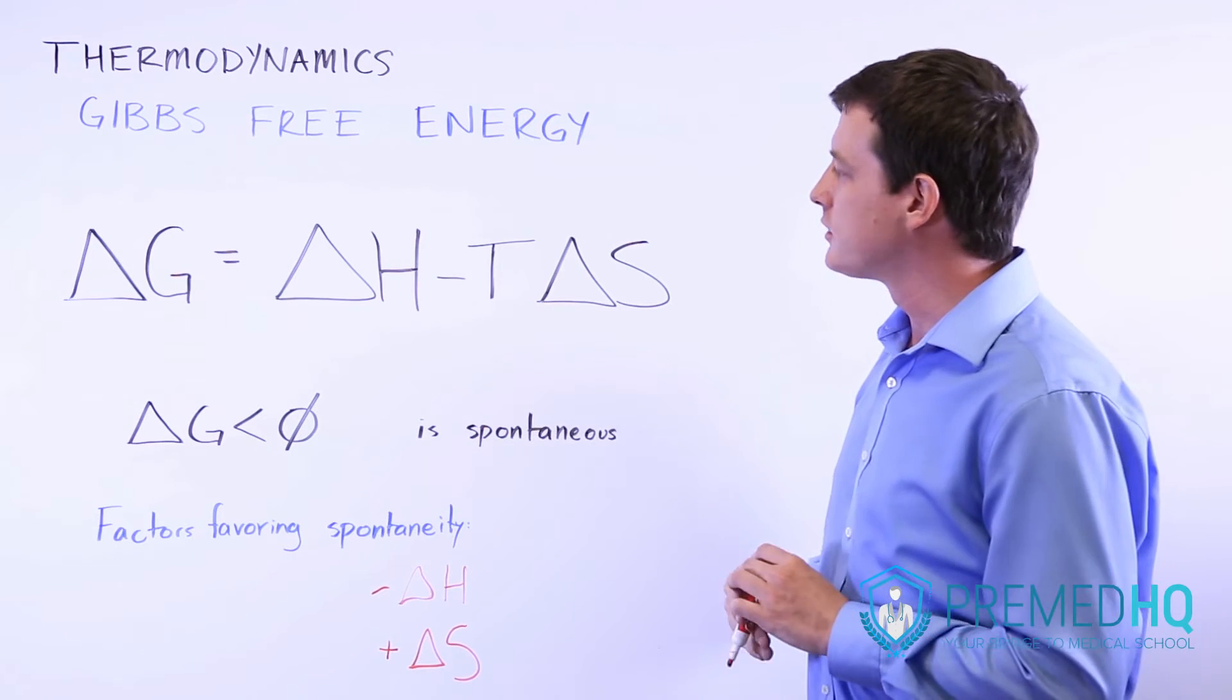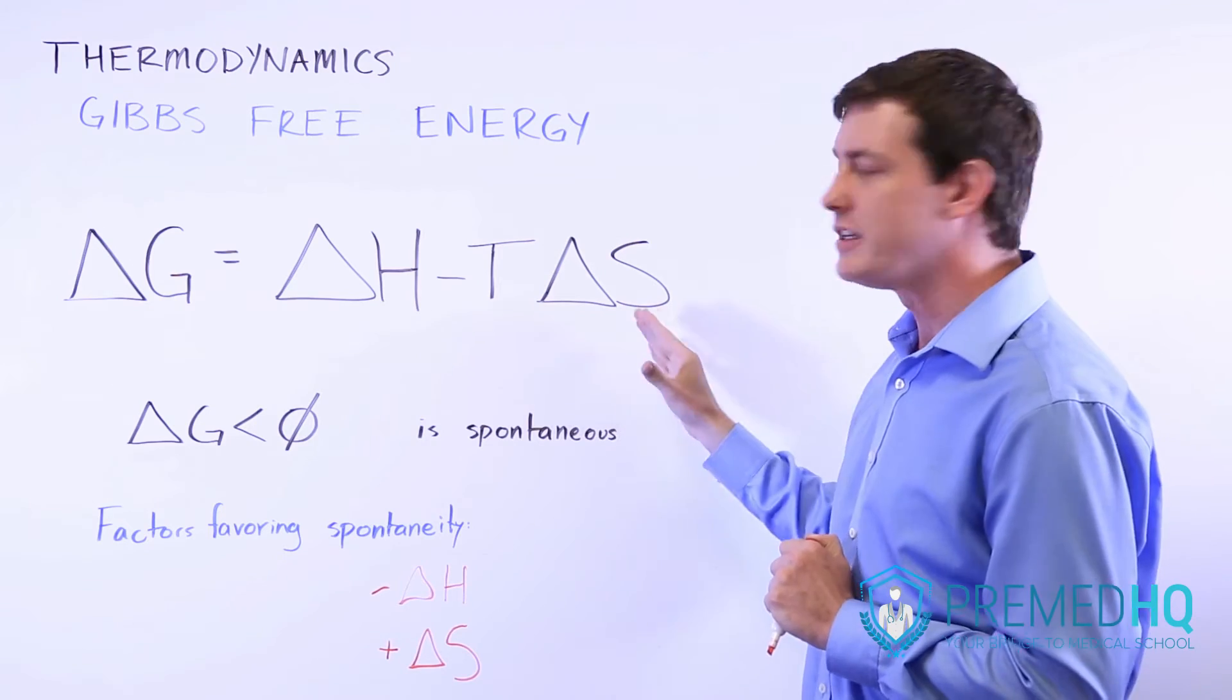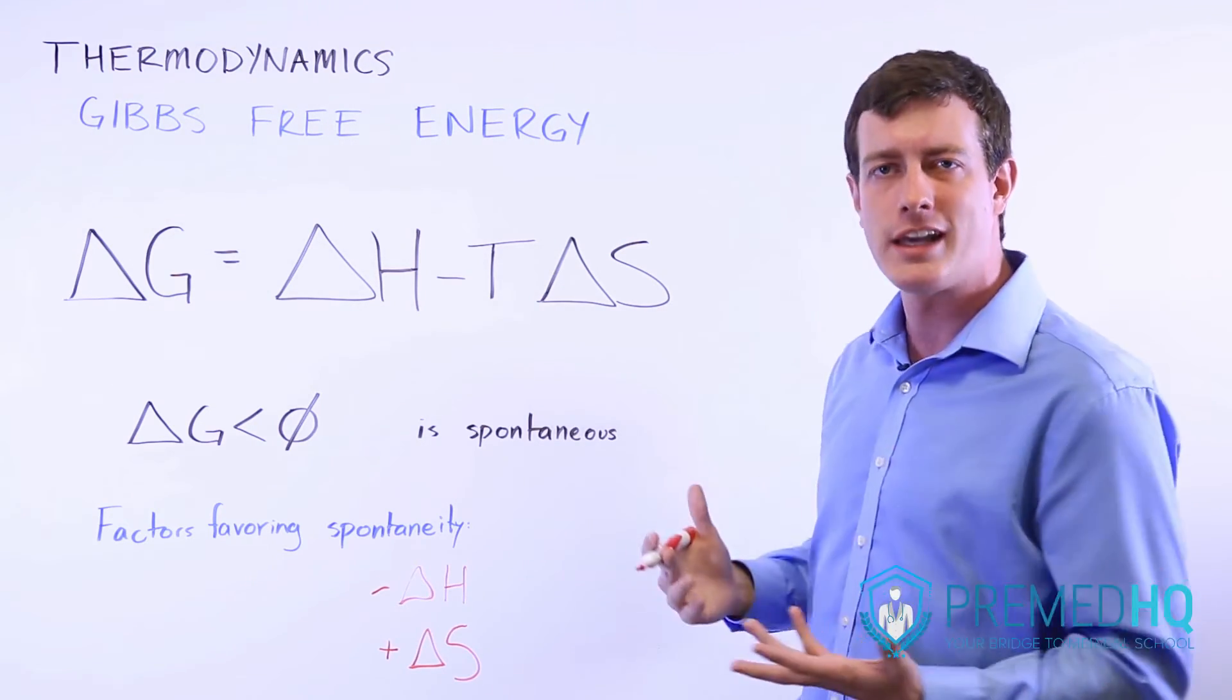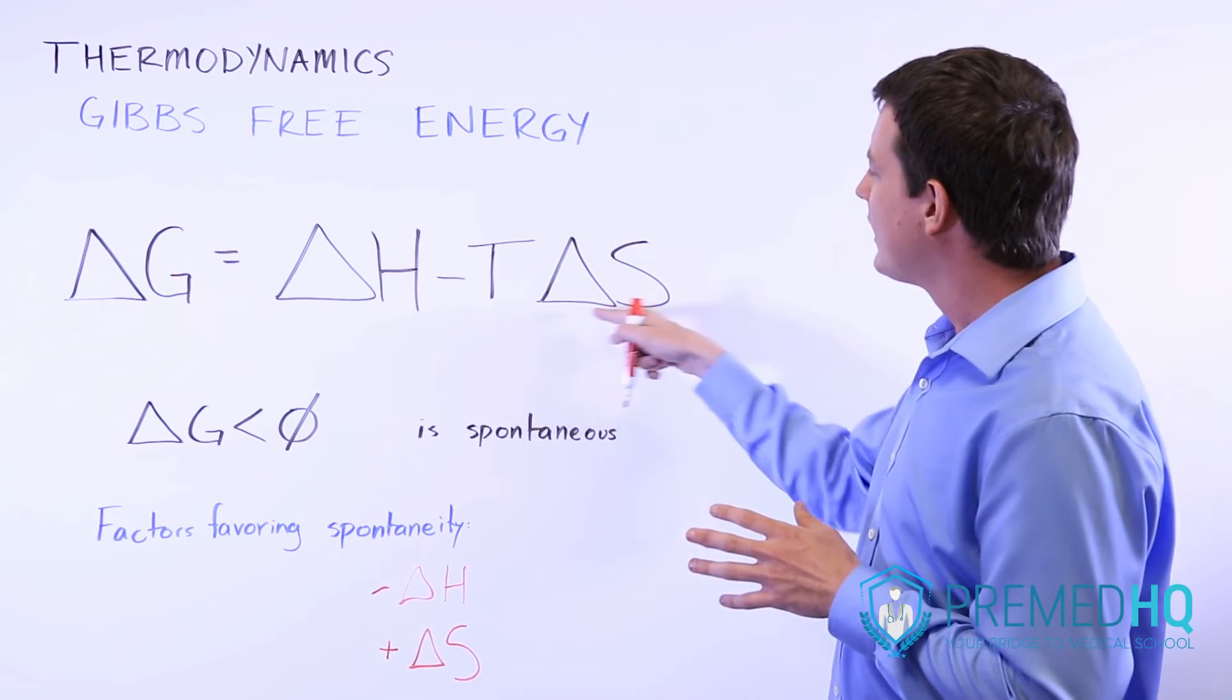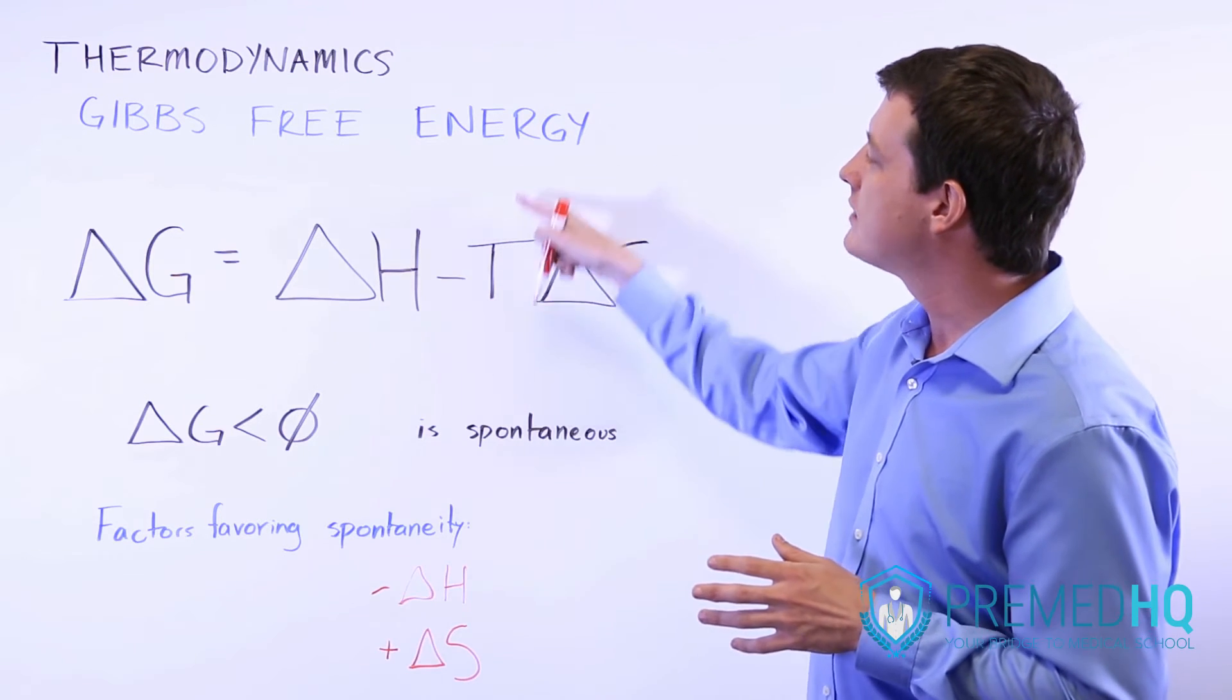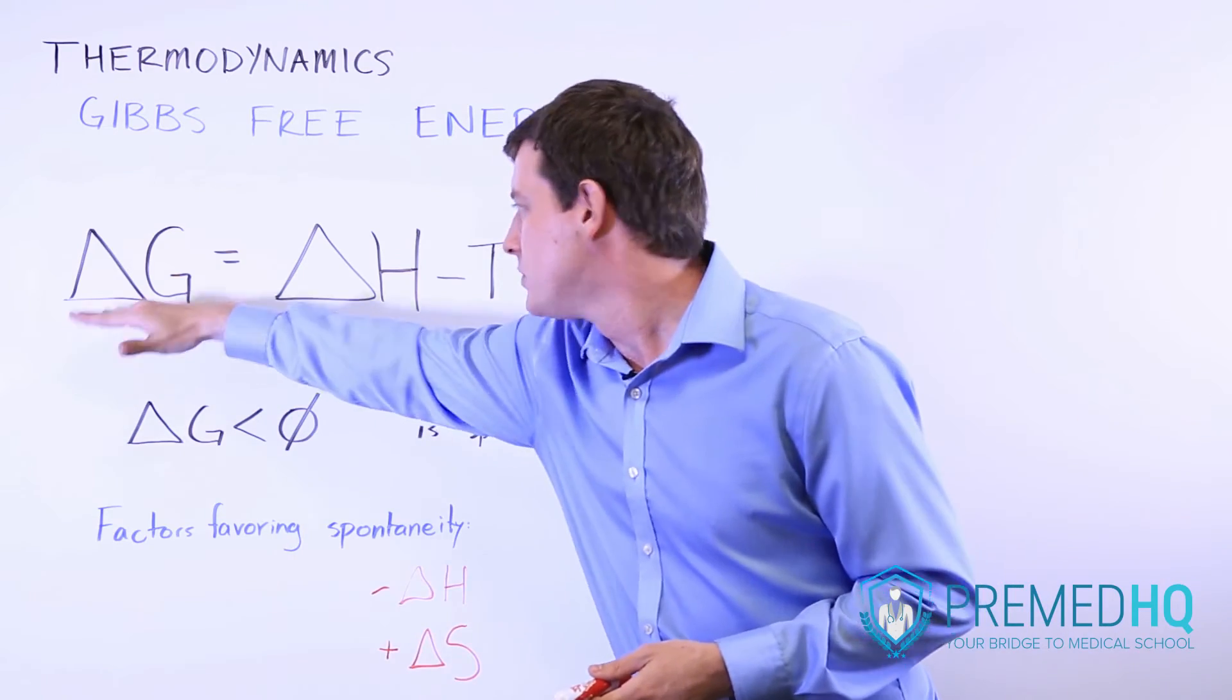Now the last thing that you'll see is more often than not you do have reactions that increase entropy. That tends to be the trend that you see with a lot of the reactions that you encounter in your general chemistry exams. And when that is the case, when you do have a positive delta S, that means that increasing the temperature increases the likelihood that Gibbs goes negative.